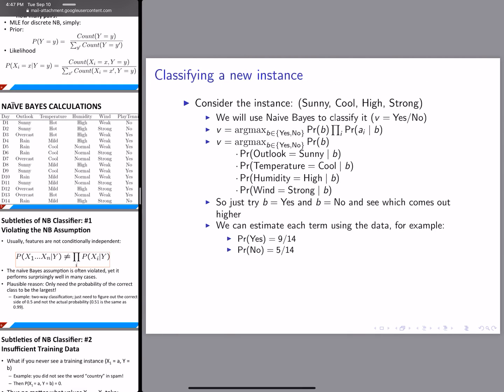Next, we calculate probability of no. Probability of no is every other data instance that is not a yes. Out of 14 we have 9 yes, so we have 5 no. Therefore probability of no is 5 over 14.